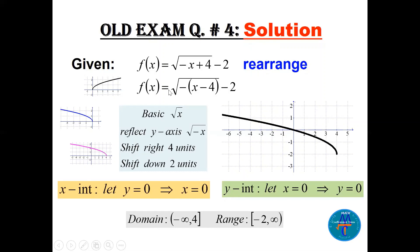Starting with the basic square root of x, I draw the small basic graph. Then applying only the −x inside gives a reflection in the y-axis. With x − 4 inside, the graph shifts to the right. So: start with the basic square root, reflect in the y-axis, then shift to the right — each step building toward the final graph.